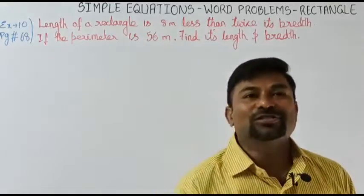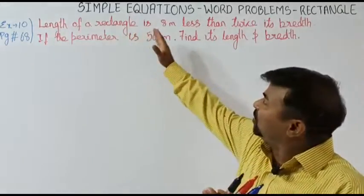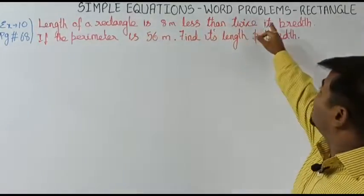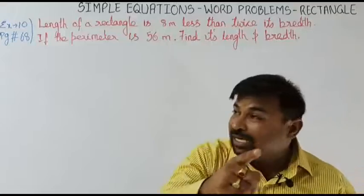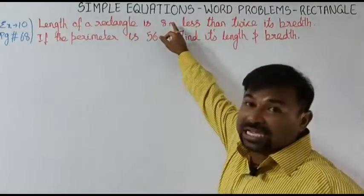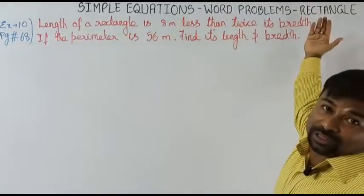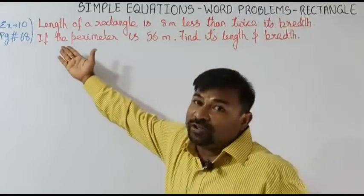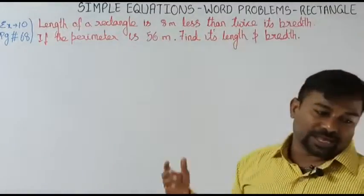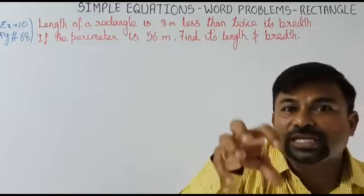The concept in this video: length of a rectangle is 8 meters less than twice its breadth. I repeat — length of the rectangle is 8 meters less than twice its breadth. Now if the perimeter is 56 meters, find the length and the breadth.